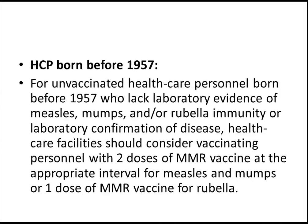For unvaccinated health care personnel born before 1957 who lack laboratory evidence of measles, mumps, or rubella immunity, or laboratory confirmation of disease, health care facilities should consider vaccinating personnel with two doses of MMR vaccine at the appropriate interval for measles and mumps, or one dose of MMR vaccine for rubella.